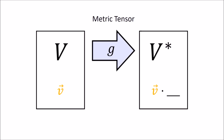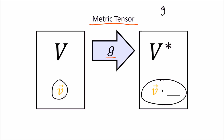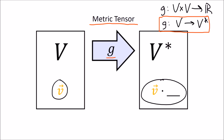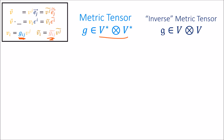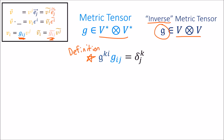We've found a way to partner up vectors and co-vectors by pairing v with the co-vector v dot something, using the metric tensor as a map from a single vector in V to a co-vector in V star. Now, what about the reverse direction — from a co-vector to its vector partner? For that, I'll introduce the inverse metric tensor, which is sort of the opposite of the metric tensor and lives in V tensor V. It is defined so that when combined with the ordinary metric tensor in a summation, we get the Kronecker delta.